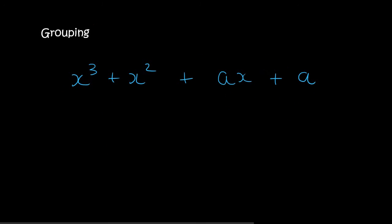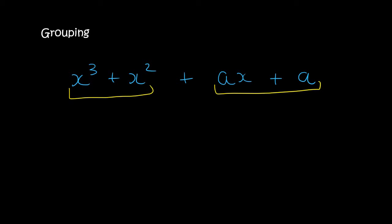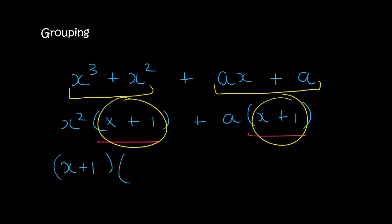Here's another one. We're going to group the first two, and the second two go together. In the first two, you can take out a common factor of x squared, and you'd be left with x plus one. In the second term, you can take out an a, and you'd be left with x plus one. These two are the same, so we've grouped them correctly. We take out x plus one as a common factor, and you'd be left with x squared plus a.